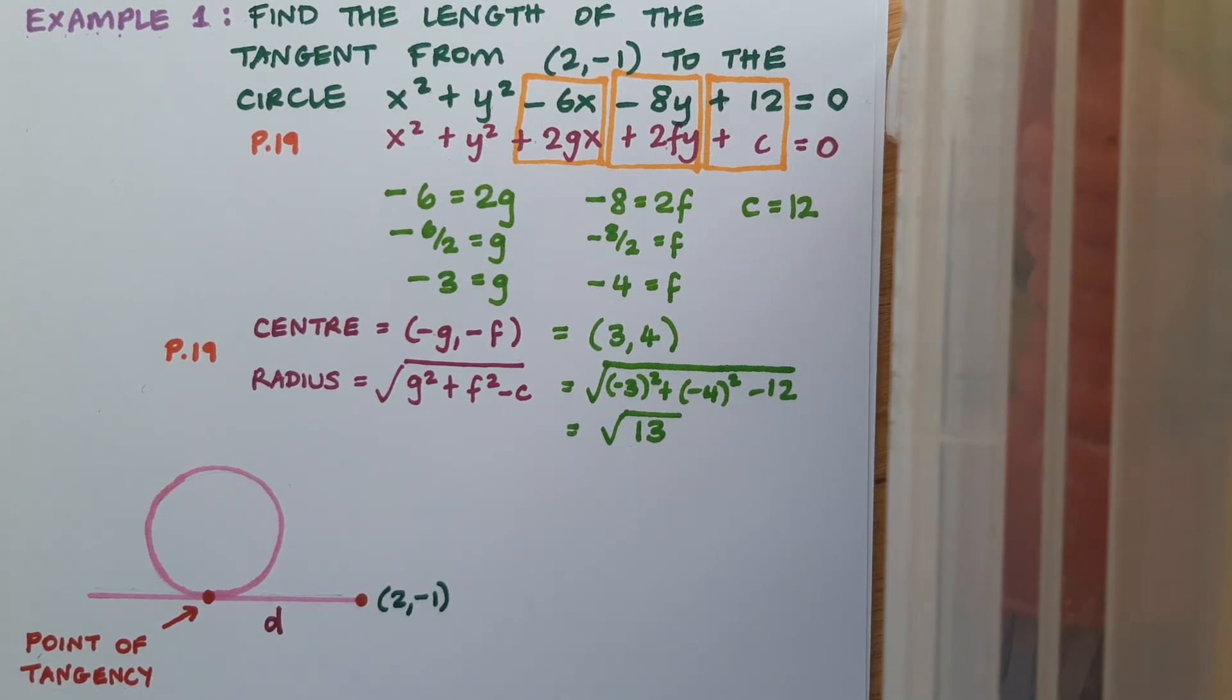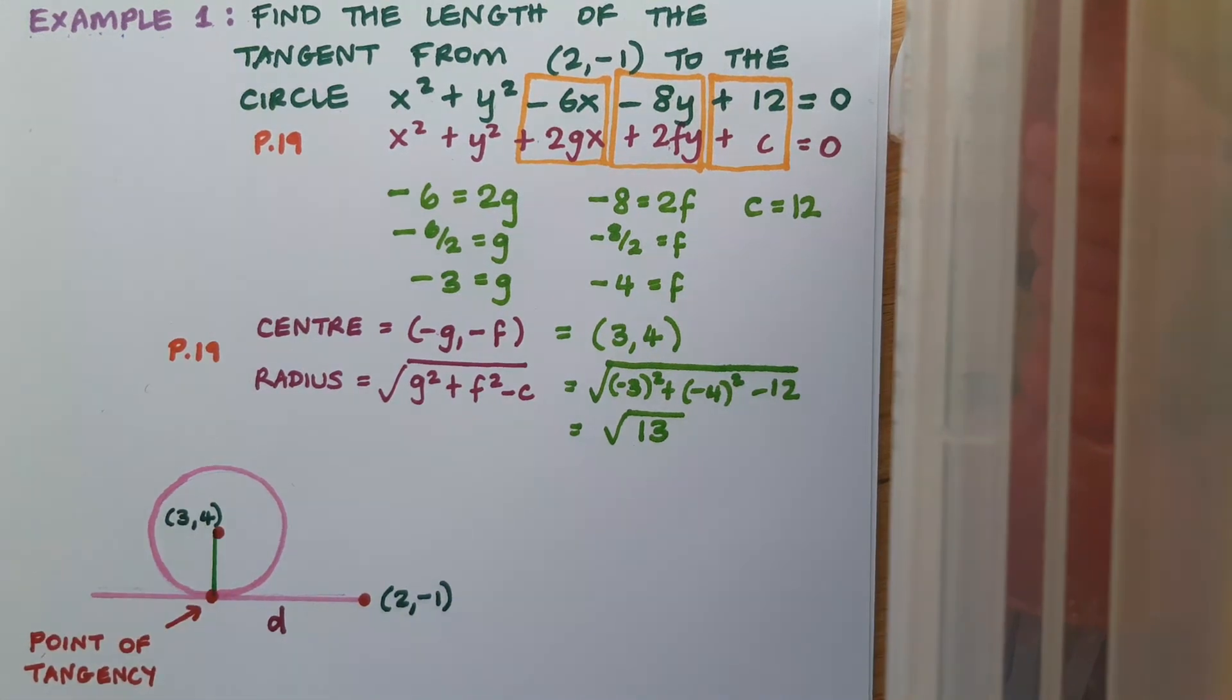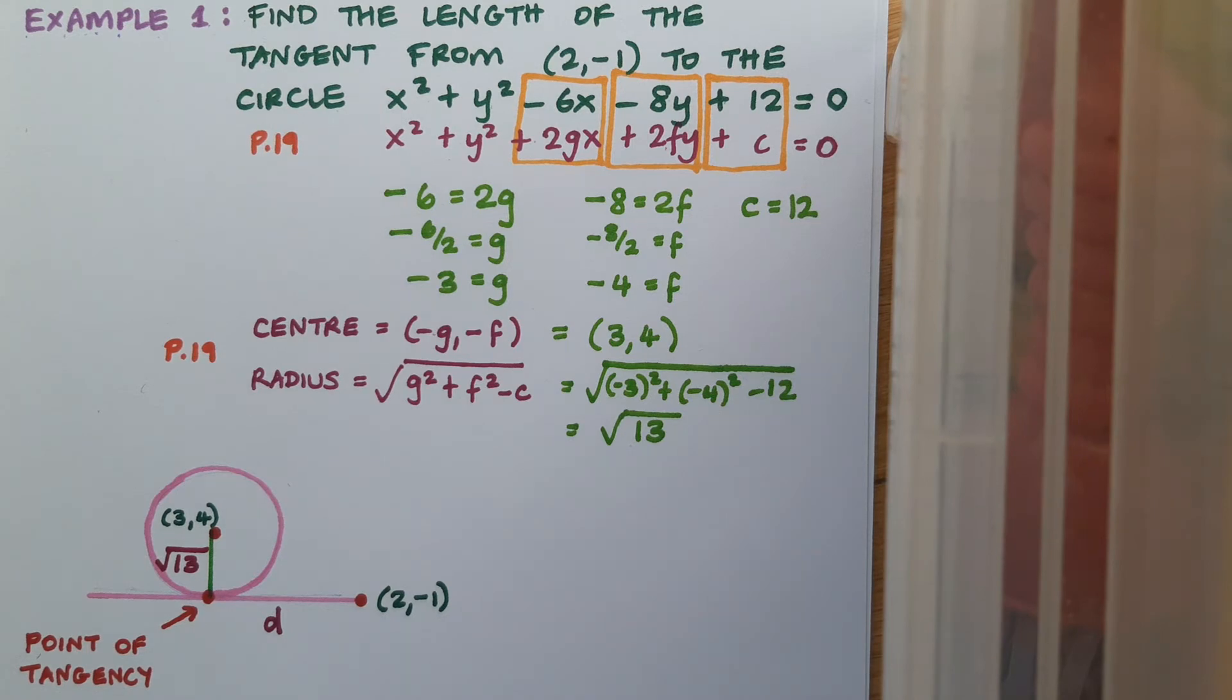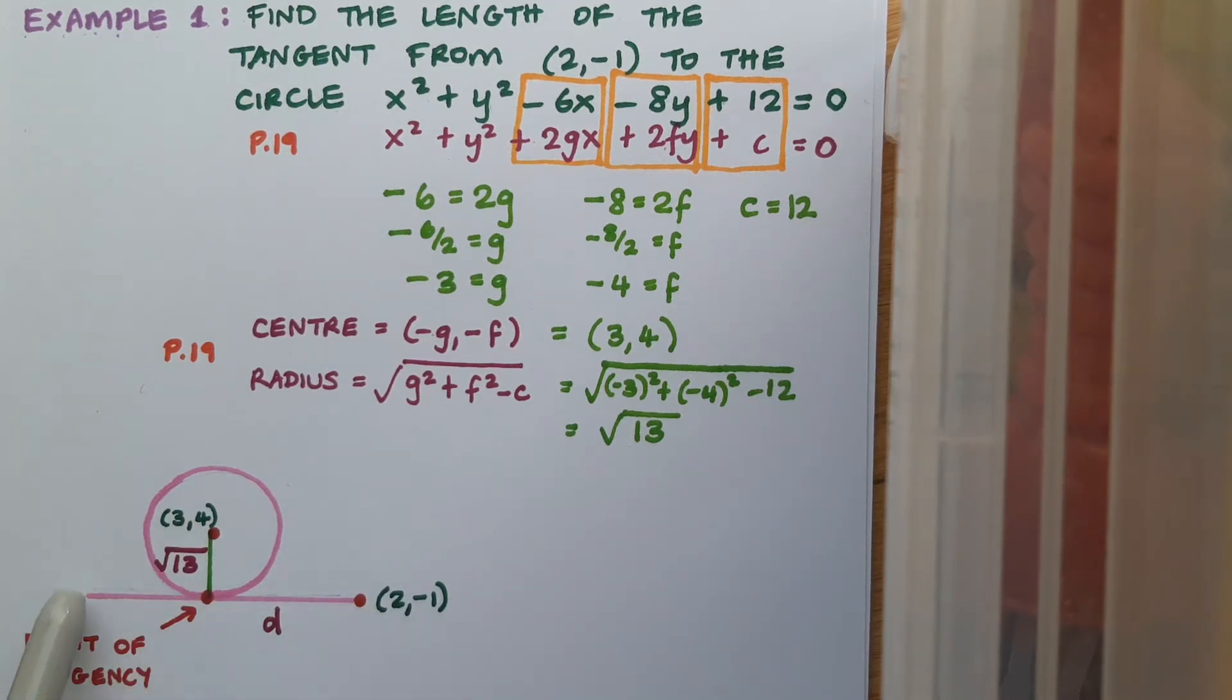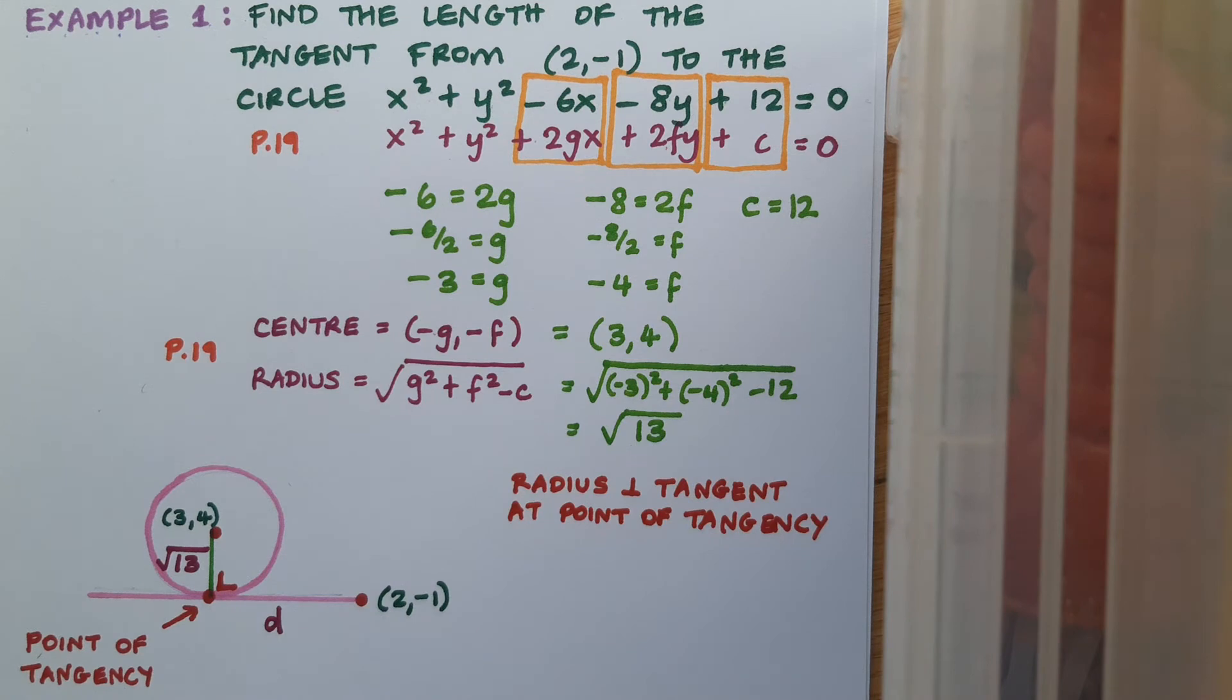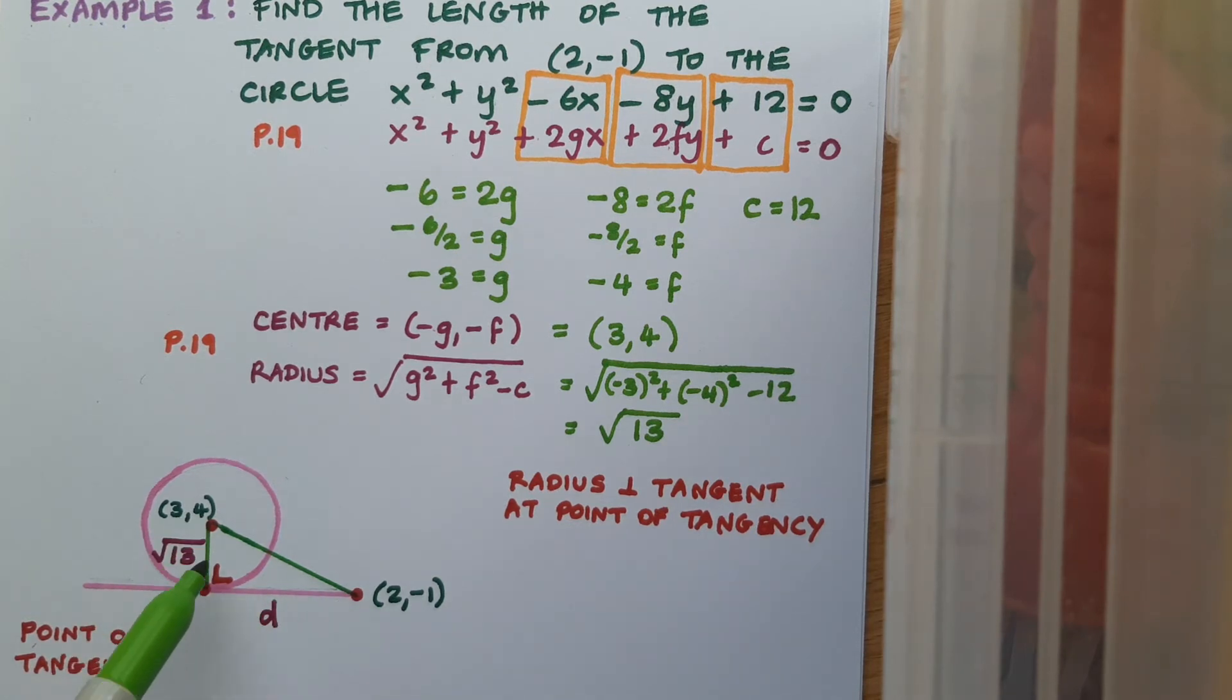So what other information can I fill into this diagram? We've done a bit of working out. We know the centre, that's the point (3, 4). And we've also worked out the radius. The obvious place to draw the radius in is to join the centre to the point of tangency, and I know that distance is √13. What do I know about the radius and the tangent at a point of tangency? Well, I know that they're perpendicular. So I've filled that right angle into my diagram. The obvious thing to do is to join these two points, and by doing so, we create a right angle triangle.